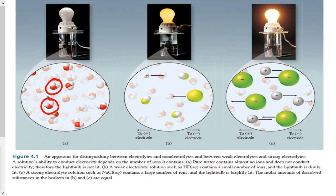If you look at B, a weak electrolyte solution such as HF contains a small number of ions, and the light bulb is dimly lit. We can see there is a positive or negative charge here — we only have two ions, and the light bulb, if you look at the brightness, is dimly lit.